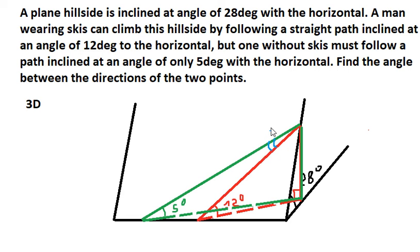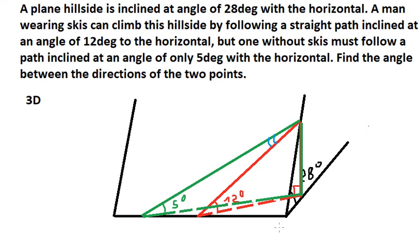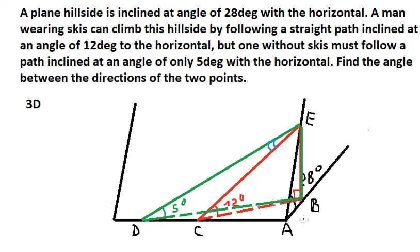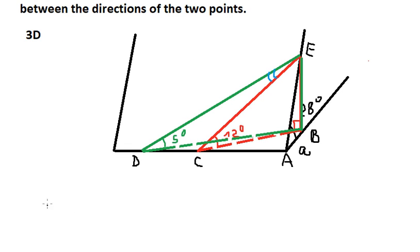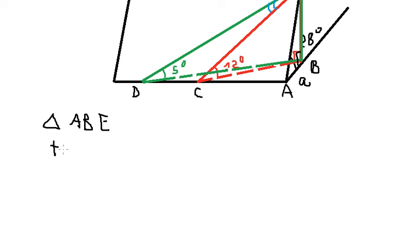Now I will show you the technique to answer this. First, I will put points here: this point is A, this point is B, this one is C, D, and E. So AB is the small side here. Now we consider triangle ABE. The angle at A is 28 degrees, and triangle ABE has a right angle at B.